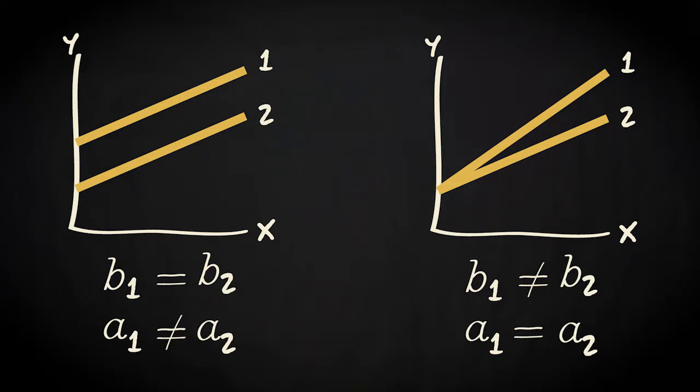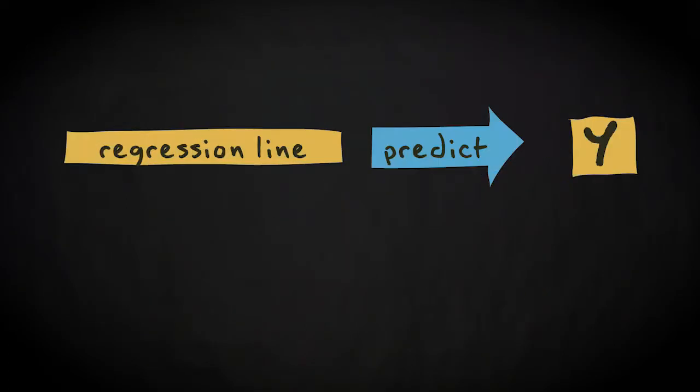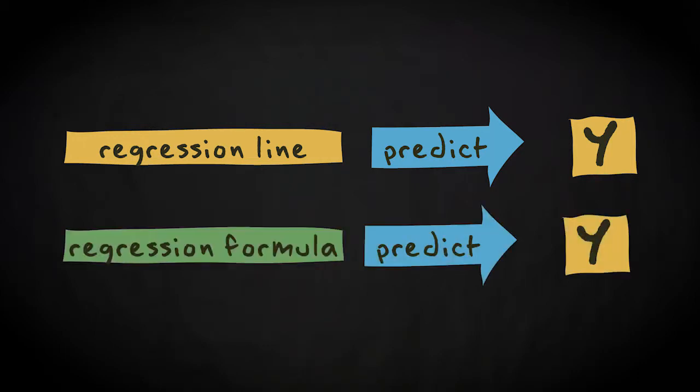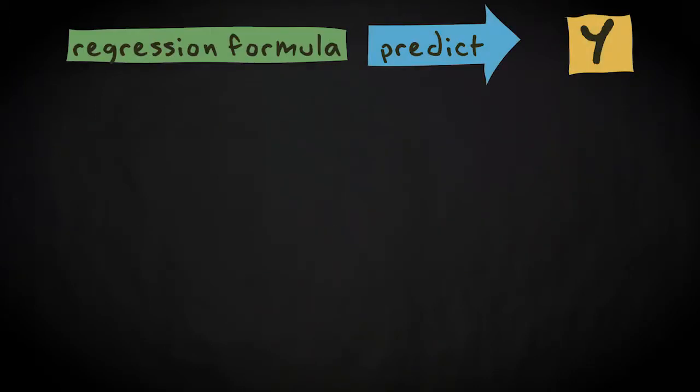I have already shown you that we can use the regression line to predict y values based on given x values. We can also use the regression formula to make predictions. Let's take our regression formula: y hat equals minus 5.63 plus 2.80 times x. We can predict our y values by using the formula.